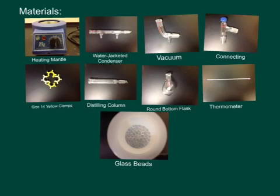This is what you will need to conduct simple and fractional distillation: your heating mantle, water jacketed condenser, vacuum, connecting tube, size 14 yellow clamps, distilling column, round bottom flask, thermometer, water, and the glass beads for fractional distillation.